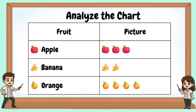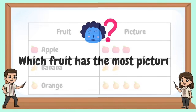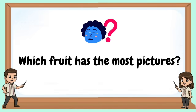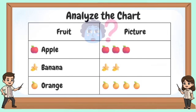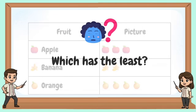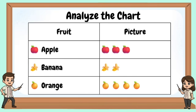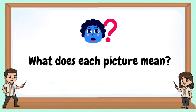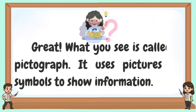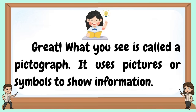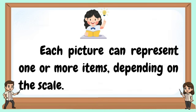Analyze the chart. Which fruit has the most pictures? Which has the least? What does each picture mean? What you see is called a pictograph. It uses pictures or symbols to show information. Each picture can represent one or more items, depending on the scale.